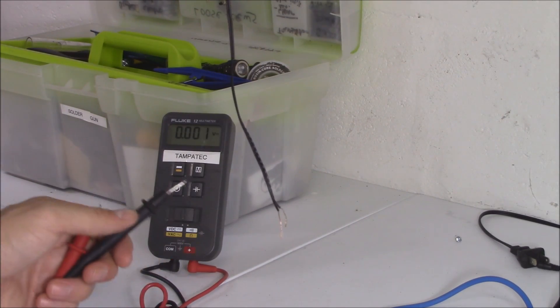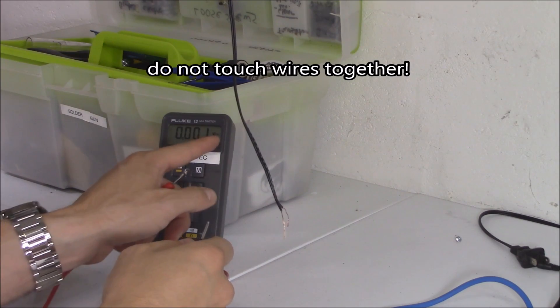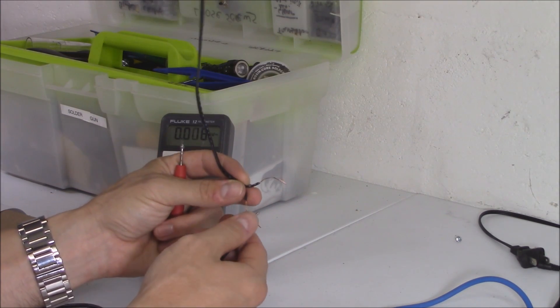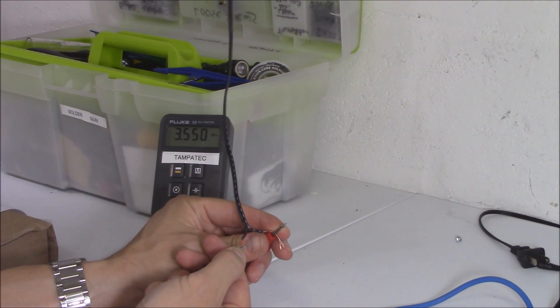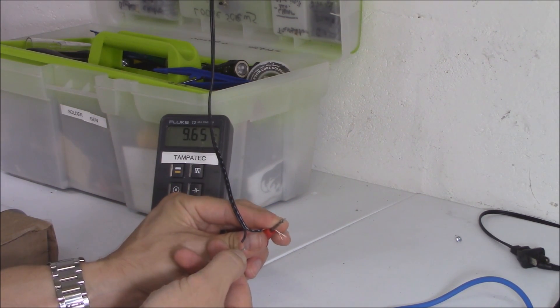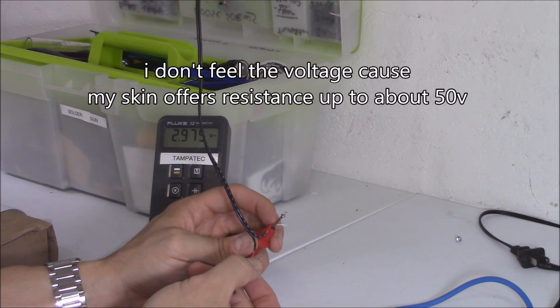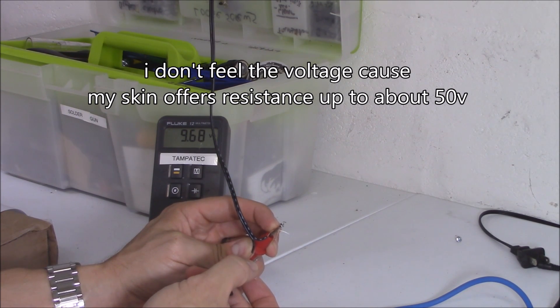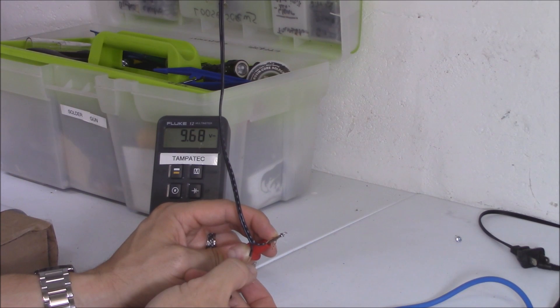So if you want to find out what side is positive and negative, this is what you do. Put your meter in DC mode. Then you put your one lead on one side, another lead on the other side, and have it plugged in, of course. And if it's reading, you might want to have gloves on when you do this, just in case there's a high voltage coming out. But it should be reading positive. 9.6 volts positive.